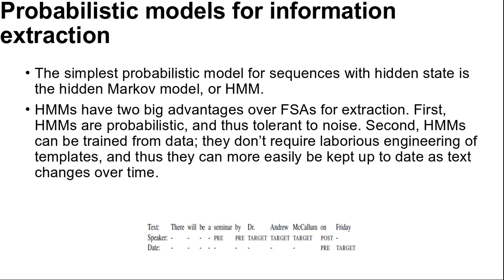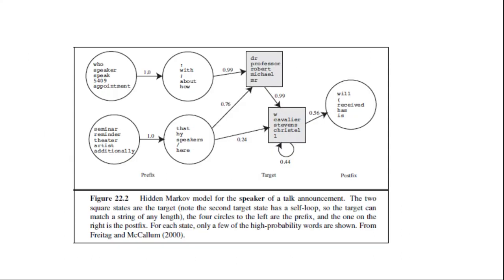HMMs have two big advantages over FSAs for extraction. First, HMMs are probabilistic and thus tolerant to noise — in a regular expression, if a single expected character is missing, the regex fails to match, but with an HMM there is graceful degradation with missing characters or words, and we get a probability indicating the degree of match rather than just a Boolean match or fail. Second, HMMs can be trained from data — they don't require laborious engineering of templates, and can more easily be kept up to date as text changes over time.